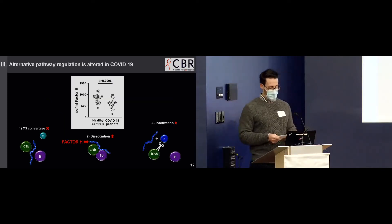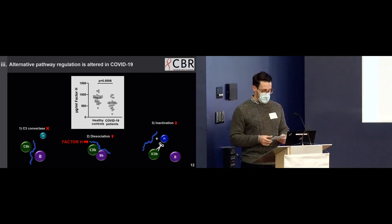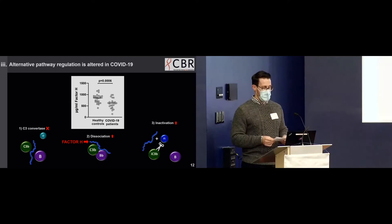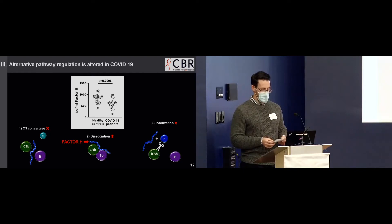One of the primary regulators of complement that can shut off the alternative pathway is factor H. Factor H attenuates complement activation through three mechanisms: it prevents formation of the C3-convertase complex, it increases the dissociation rate of the C3-convertase complex, and it acts as a cofactor for factor I to inactivate C3B to IC3B. Surprisingly, we found that factor H was significantly lower in patients compared to controls, which could be a contributing factor in the heightened activity of the alternative pathway. But currently, the cause of this effect is unclear.